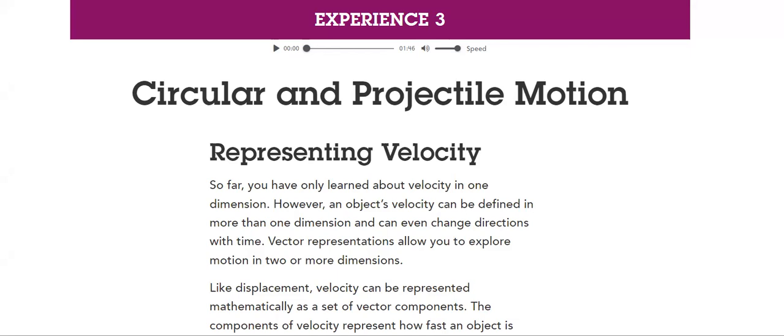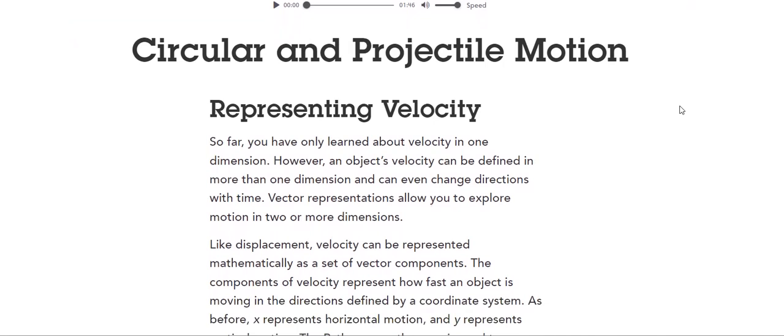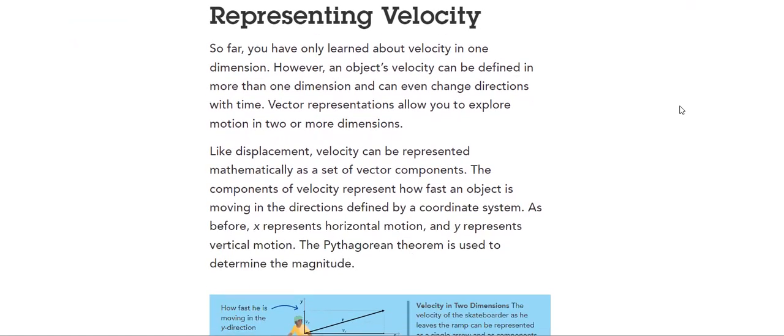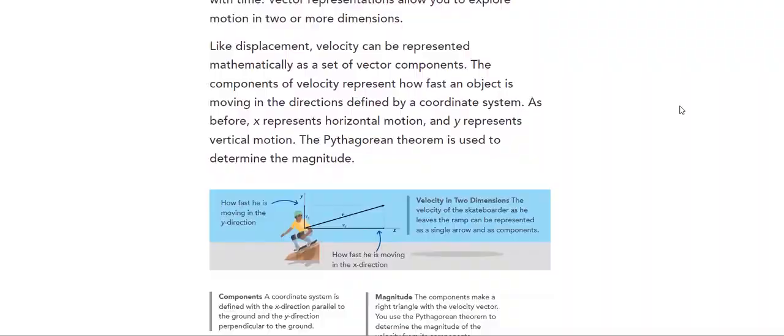However, an object's velocity can be defined in more than one dimension and can even change directions with time. Vector representations allow you to explore motion in two dimensions or even more dimensions. Like displacement, velocity can be represented mathematically as a set of vector components. The components of velocity represent how fast an object is moving.